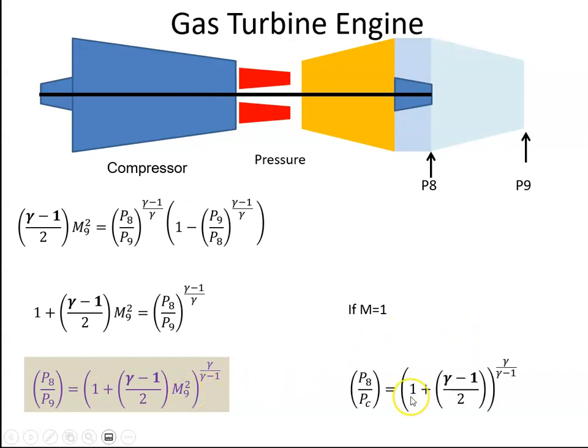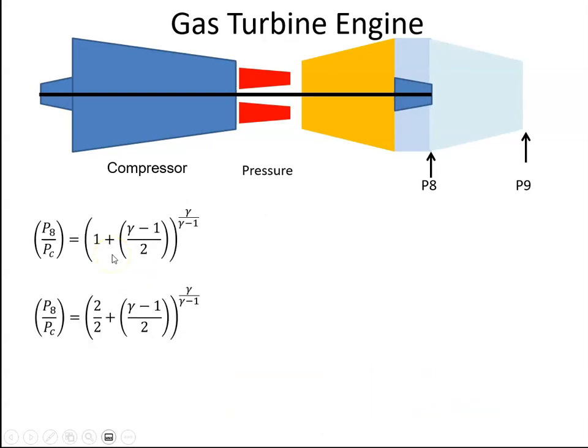This one here is just the same as 2 over 2, so 2 divided by 2 is 1, and then we just add the fractions. I'm not calling it P9 anymore because M is equal to one, so I'm calling it the critical pressure.